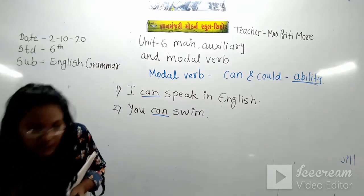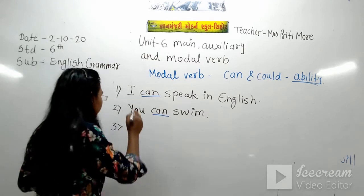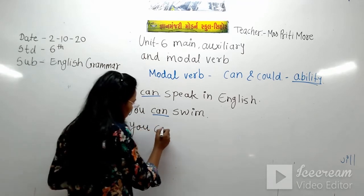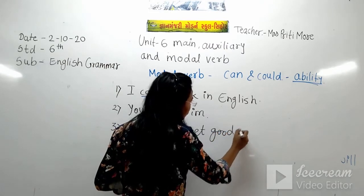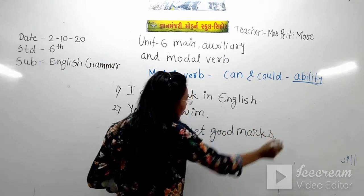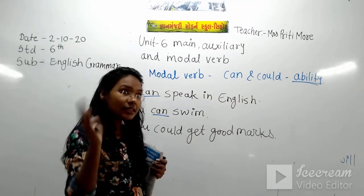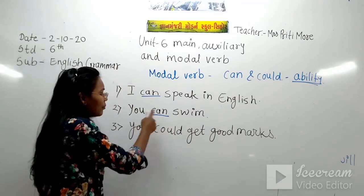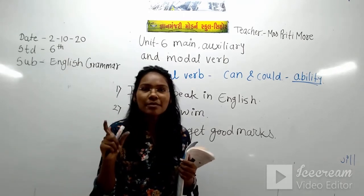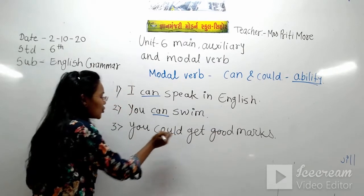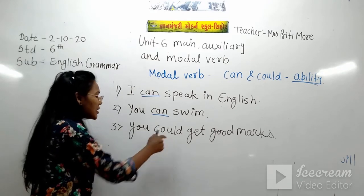This is the present form. Now for the past, we use could. For example: 'You could get good marks' — aapko achche marks mil sakte the. That means in the past, if we have to show ability, we use could.